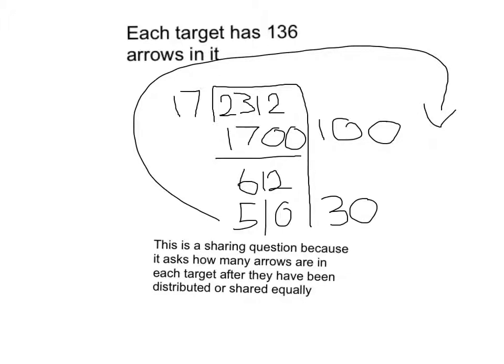Put that line there. So 612 minus 510 is 102. 17 times 6 is 102. That's why I chose 6.